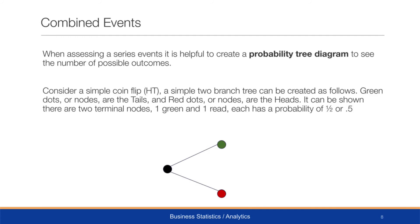When assessing a series of events, it's helpful to create a probability tree diagram to see the possible outcomes. Consider a sample coin flip with heads and tails — we can create a simple branch tree with two branches. Green dots represent tails and red dots represent heads; these are called nodes of the tree. For a single coin flip there are two terminal nodes, one green and one red, each with a probability of one-half, or 0.5, of occurring.